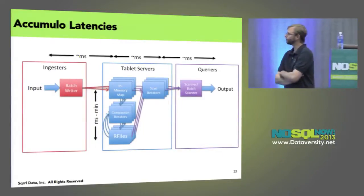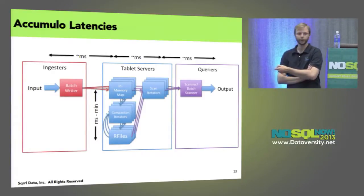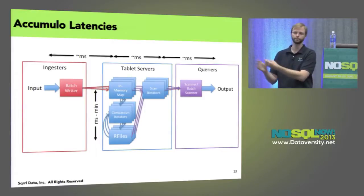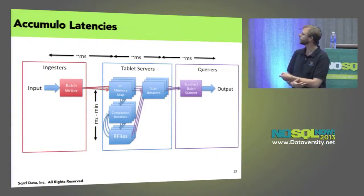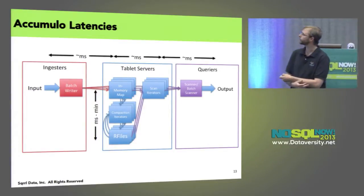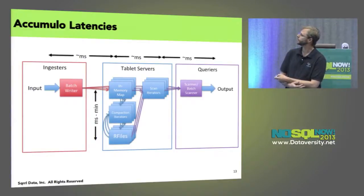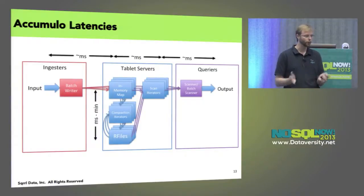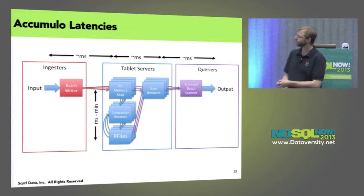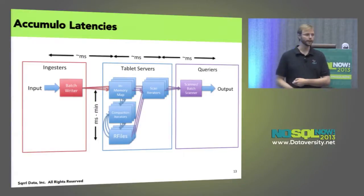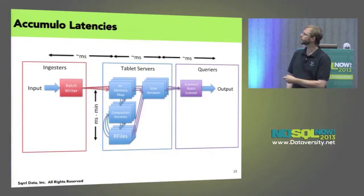Let's look at latencies. The way I write data to Accumulo is through this batch writer mechanism — I send a bunch of key-value pairs grouped as mutations to rows. Those hit the tablet server, go into the in-memory map, and at some point they get scanned. The scan also brings in data from files. On the client side I have a scanner. The time to ingest into the in-memory map — we're talking about a millisecond. The latency to scan that data from the in-memory map and R-file into scan iterators is also on the order of a millisecond. With a lot of seeks it can be larger; with caching it can be smaller. Querying out is also on the order of a millisecond — so end-to-end, our latency is very much real-time.